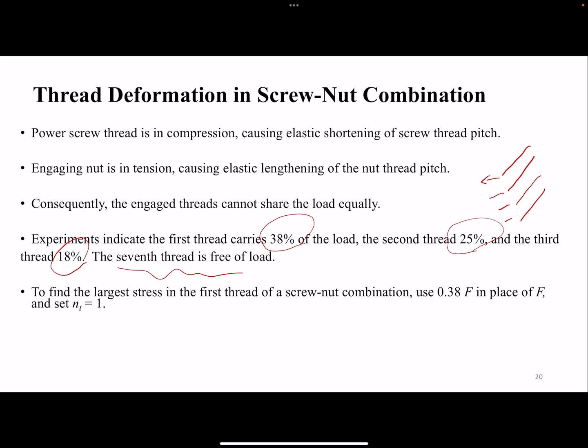We are interested in the most critical or the weakest point, and the weakest point would be the first thread that carries 38% of the load. So, we really don't need to analyze all the threads, but only the thread that carries the largest load. So, the approach that we are going to have is that we are going to use 0.38F in place of F, and then we use NT equals 1. Because we don't need to deal with all the threads that are involved, we're just analyzing for the first thread. The first thread doesn't take all the load, but takes the majority of the load, the 38% of the load. And that's what we are going to do. So, remember, change the force to 38%, and then use NT equals 1 for the analysis.